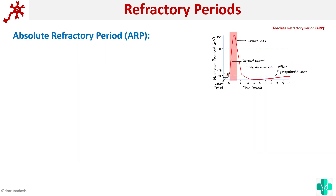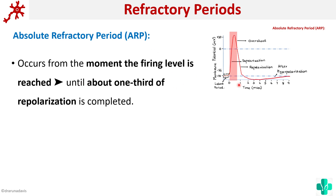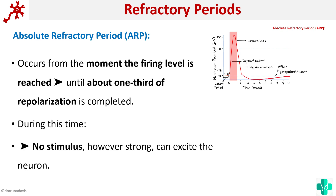The absolute refractory period occurs from the moment the firing level is reached until about one third of repolarization is complete. During this time, however strong the stimulus is, the nerve fiber will not fire. Why? Because any stimulus, however strong, cannot excite the neuron during this period.